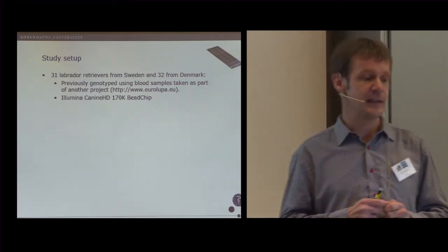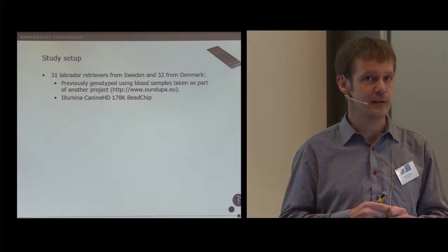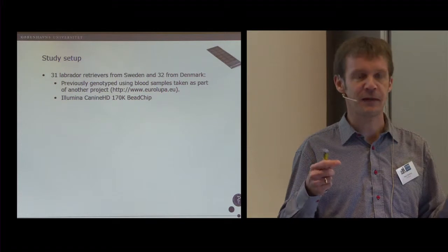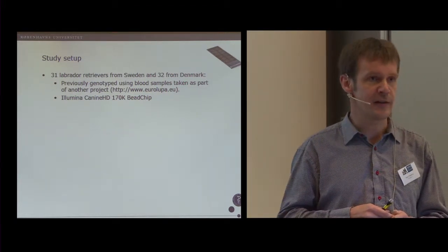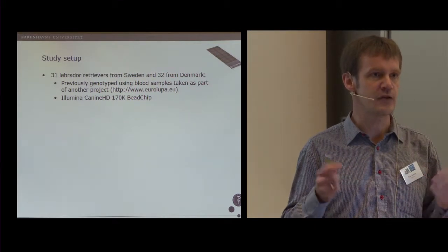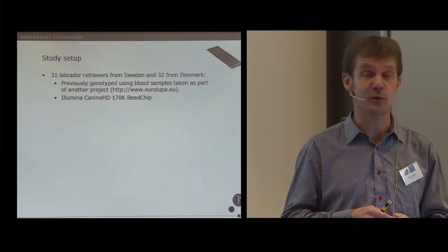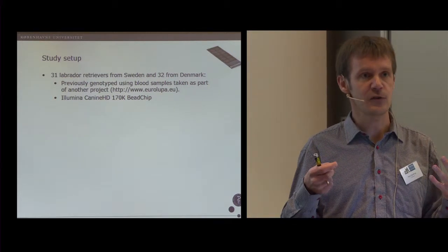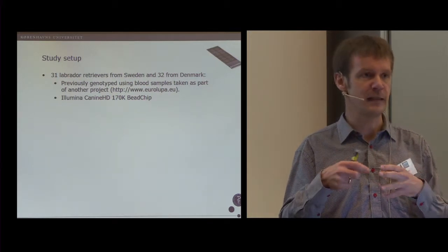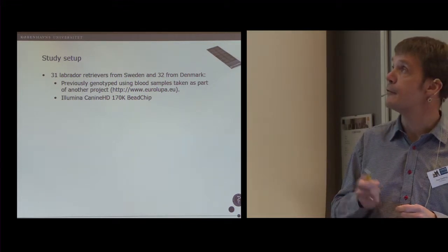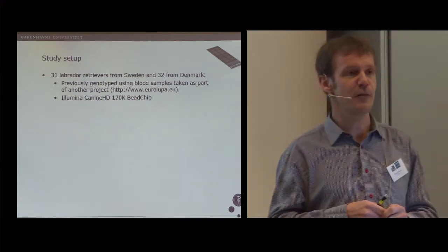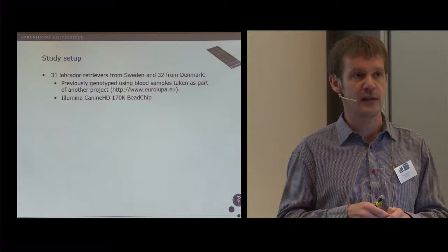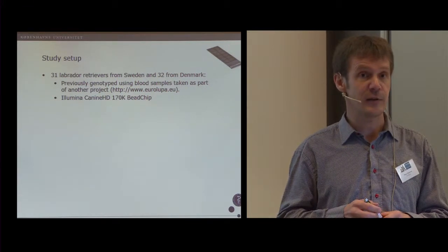The study we did had a study setup including Labrador retrievers from Sweden and Denmark. You may ask yourself why Labradors and why from Sweden and Denmark, but this is because we relied on previous data obtained as part of the LUPA project, which you may have heard about, a large European project with the genotyping of dogs. In that project, Labrador retrievers had been involved and blood samples had been taken from these dogs and DNA had been extracted. From that DNA, the dogs had been genotyped using a chip where you can see genetic variation in 170,000 different places on the dog's genome. So you get a very detailed insight into the dog's genome, the chromosomes of the dog.